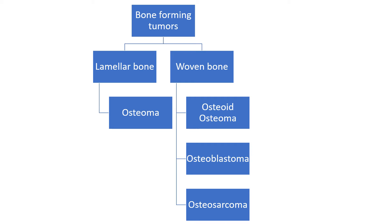Here's my approach to bone-forming tumors. If you see lamellar bone, it's probably in all likelihood going to be an osteoma. There are exceptions, but they're very few — and of course, as you well know, there are exceptions to every rule.